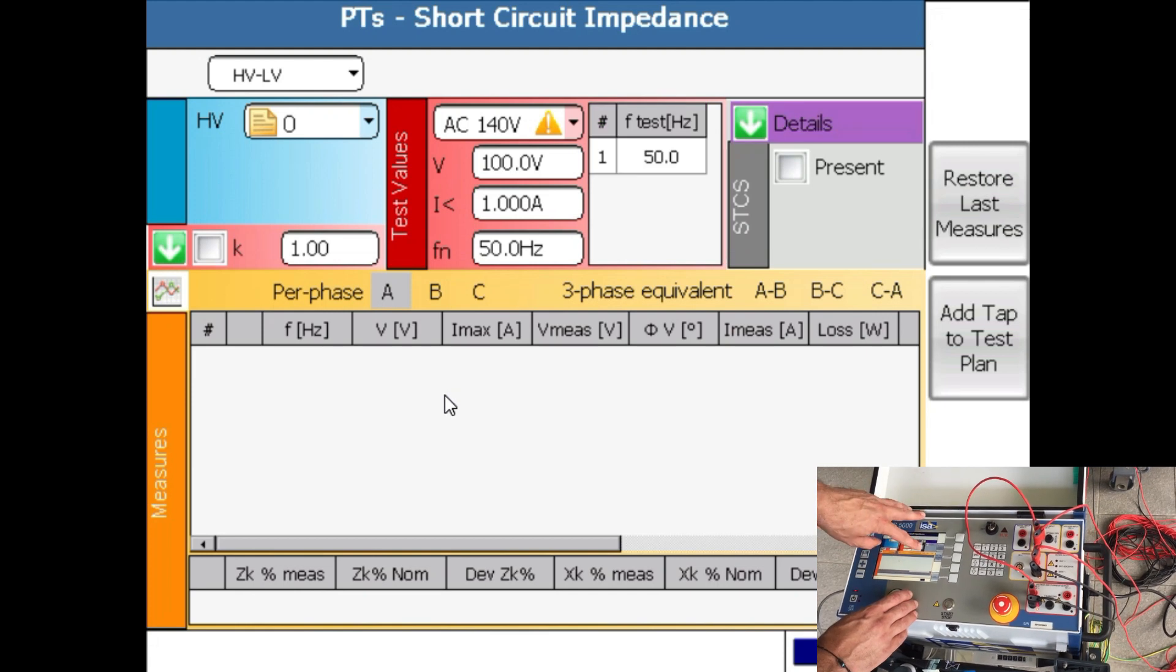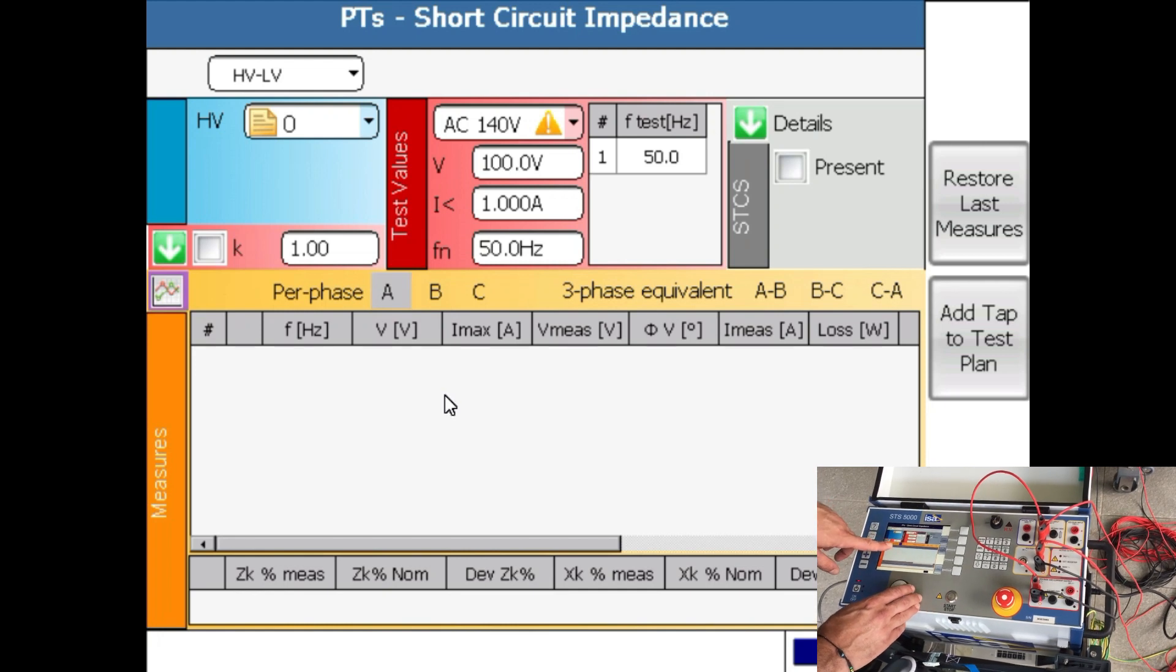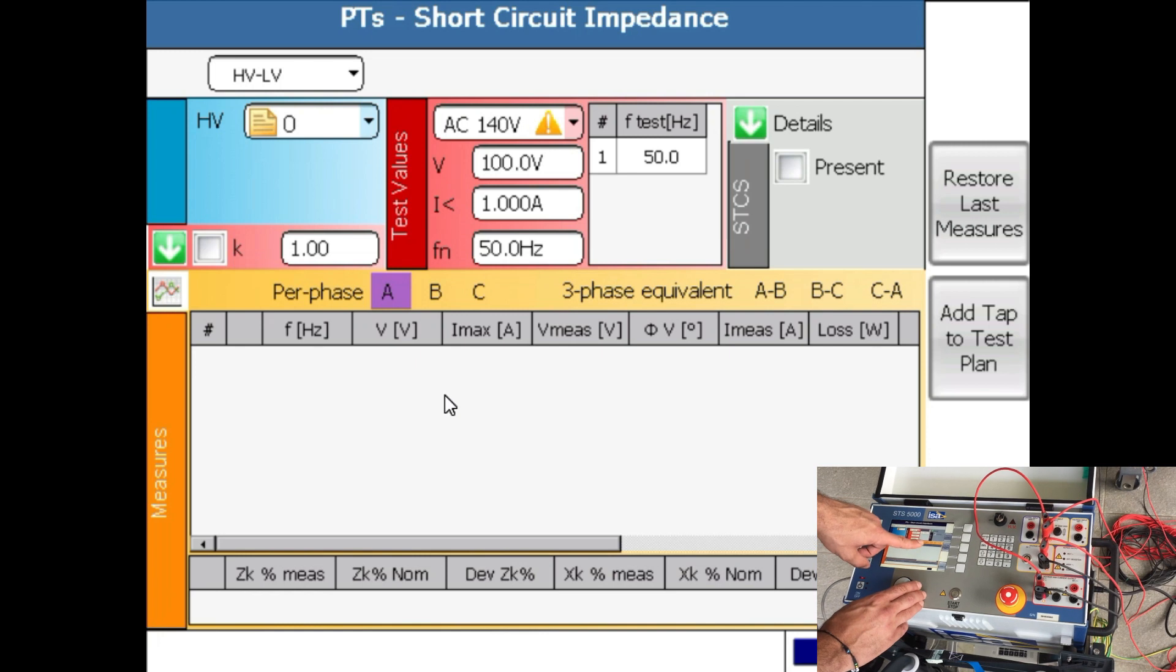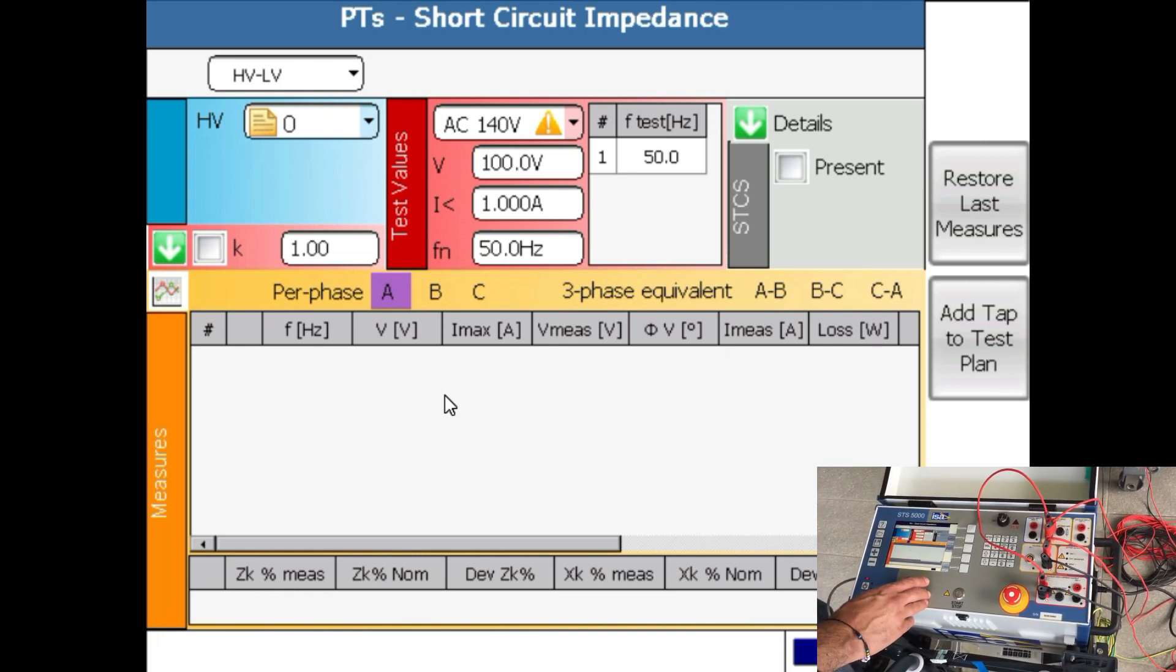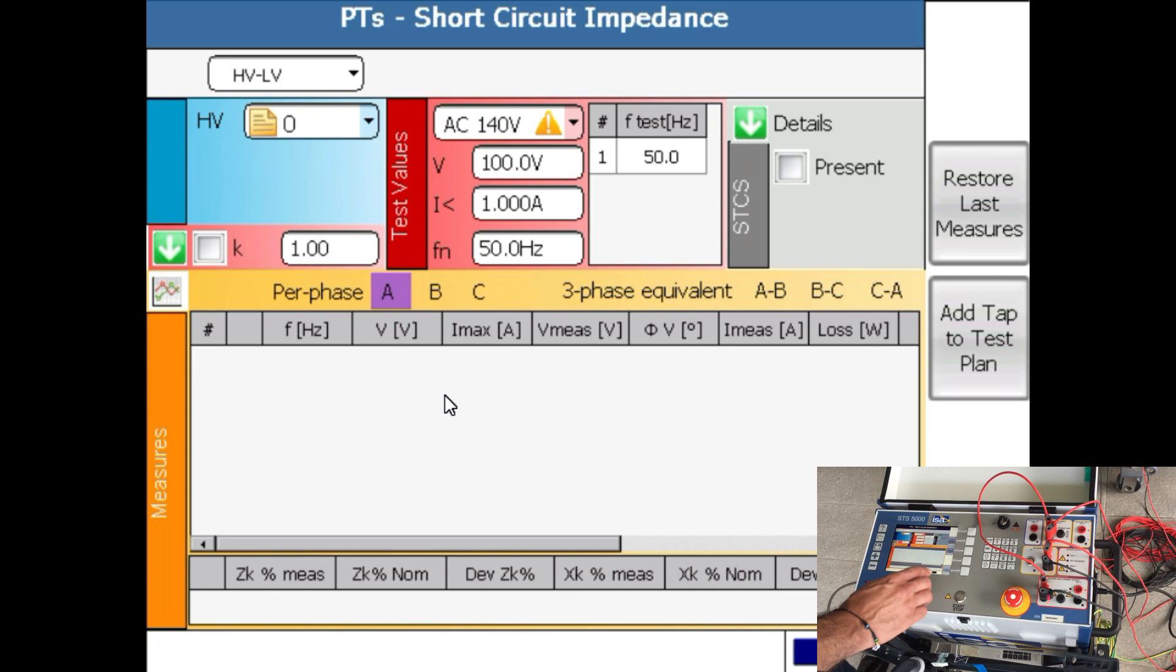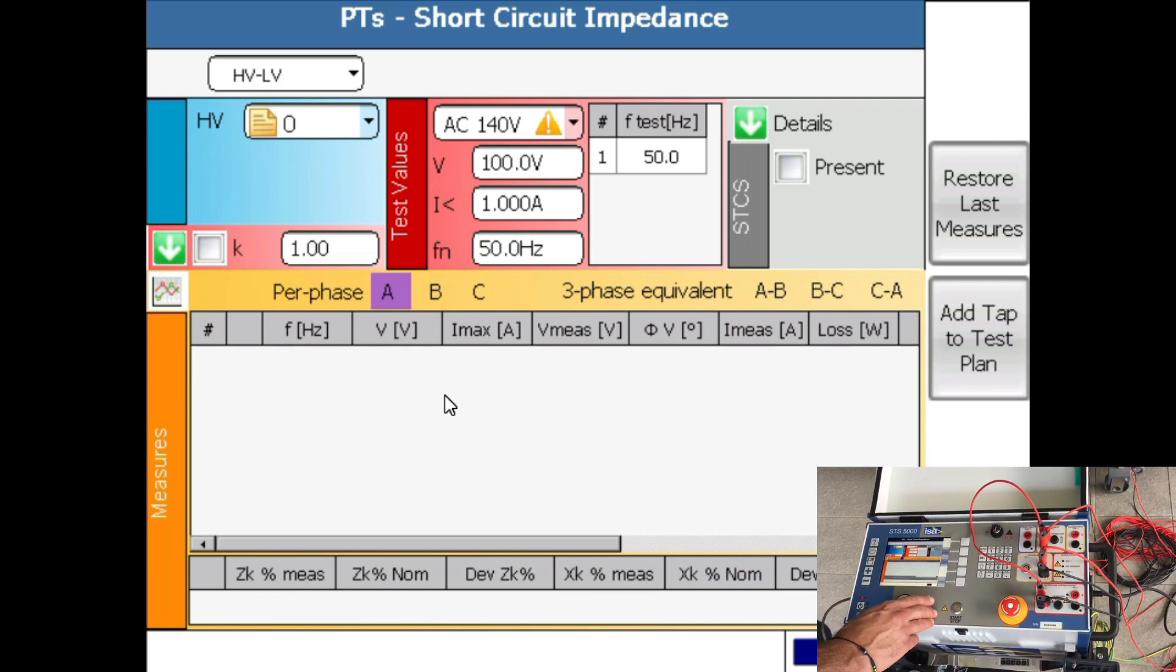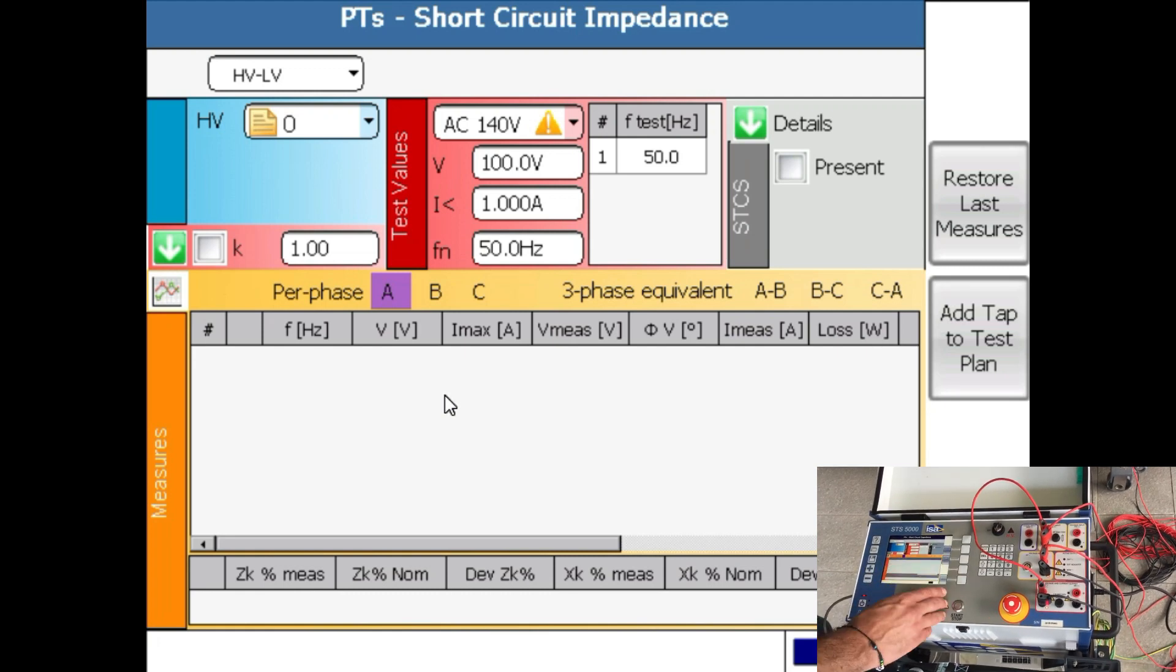Proceeding, I'm not using STCS for now, so I'm leaving that as it is. Then I need to decide whether I will do it per phase test or a three-phase equivalent. Three-phase equivalent is done in 80 or 90 percent of the cases because the number you're getting on the nameplate is done in the factory using three-phase equivalent method. Three-phase equivalent has to be used if you have a delta on any side of the transformer. Since I have a DYN 11, I have to use three-phase equivalent.